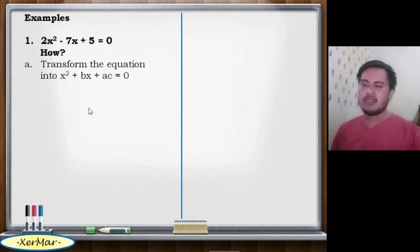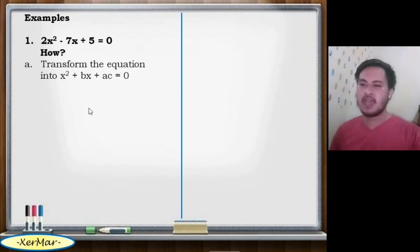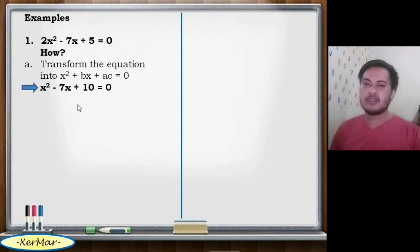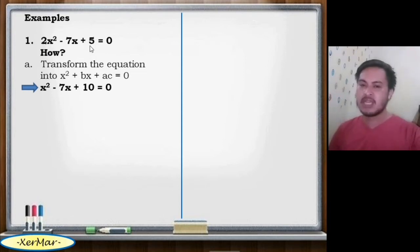Letter A: transform the equation into x squared plus bx plus ac equals 0, meaning we are going to multiply the value of a to c. Thus, x squared minus 7x plus 10 equals 0. We multiply the value of a, which is 2, to the value of c, which is 5, and that gives 10.